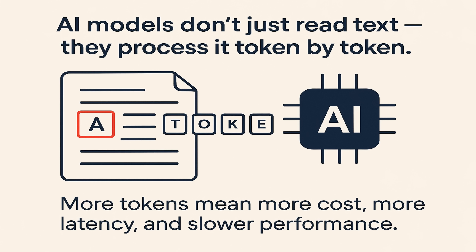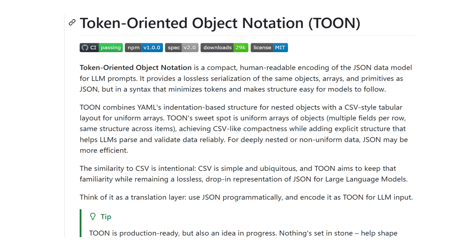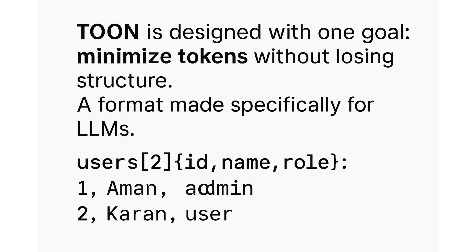AI models don't just read text — they process it token by token, and in LLMs, every character matters. More tokens means more cost, more latency, and slower performance. This is where TOON changes the game. Don't get confused with Toon Disney — TOON stands for Token-Oriented Object Notation. It is designed with one goal: minimize tokens without losing structure. It is a format made specifically for LLMs.